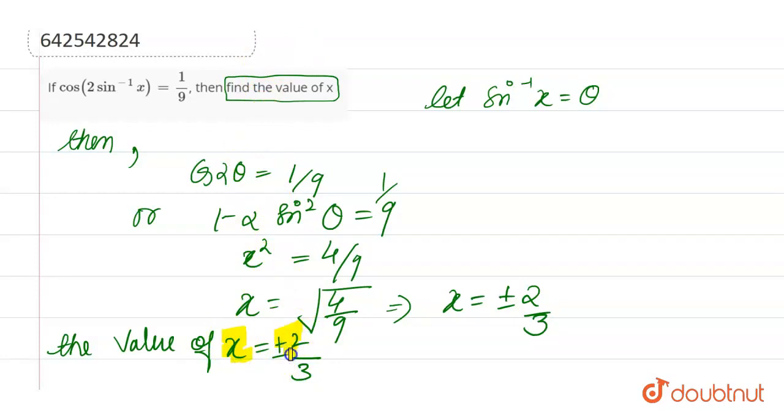So, x is equal to plus and minus 2 by 3. This is our final value of x. Thank you.